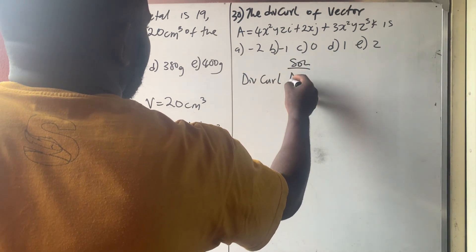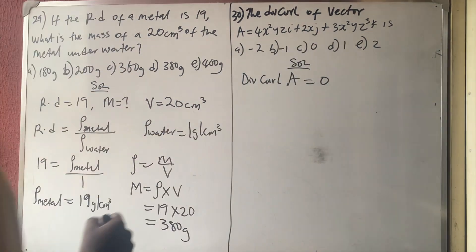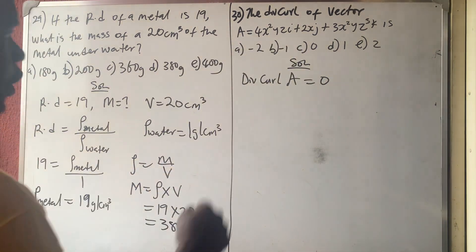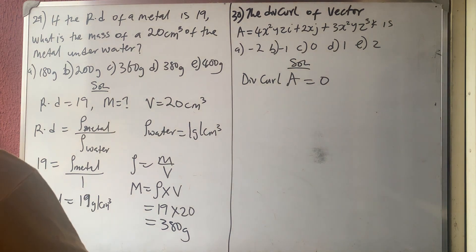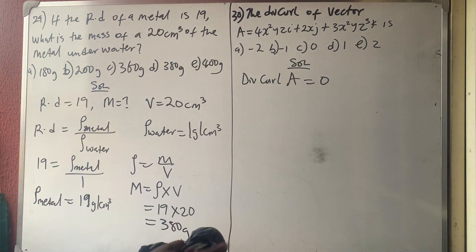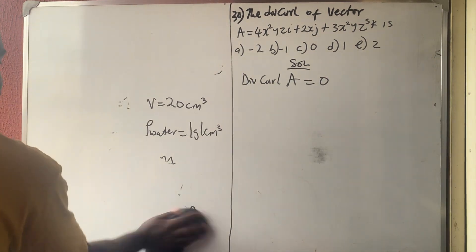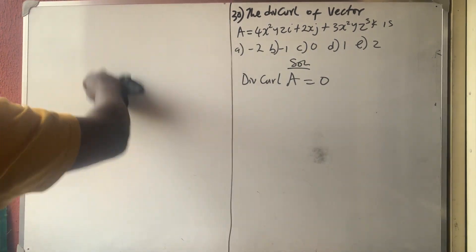The divergence of the curl of any vector is equal to zero. Don't solve anything — the answer is zero. They say the div curl of vector A; they gave you the vector A. Even if you solve it you will still get zero, so the answer is just zero.